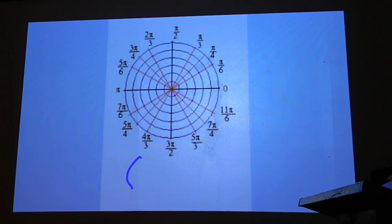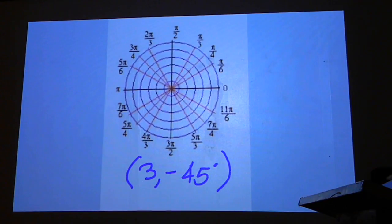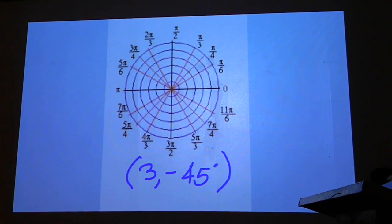We're going to plot the point (3, -45°). Now, if you want to go negative 45 degrees, step one is to insert another couple of spokes here to make it a true 15-degree increment all the way in that quadrant.